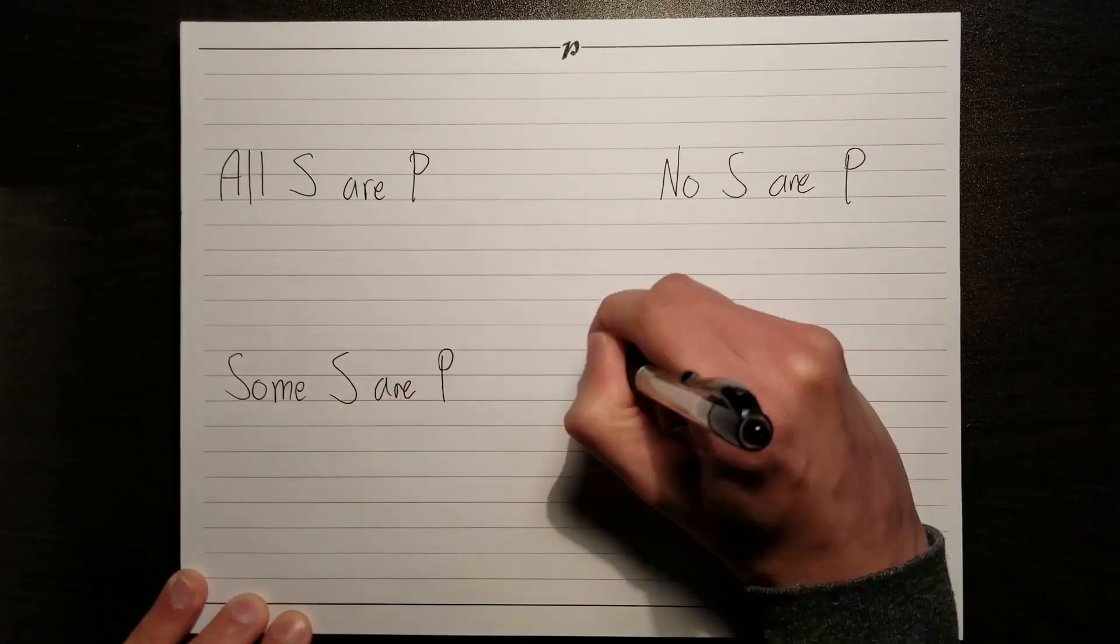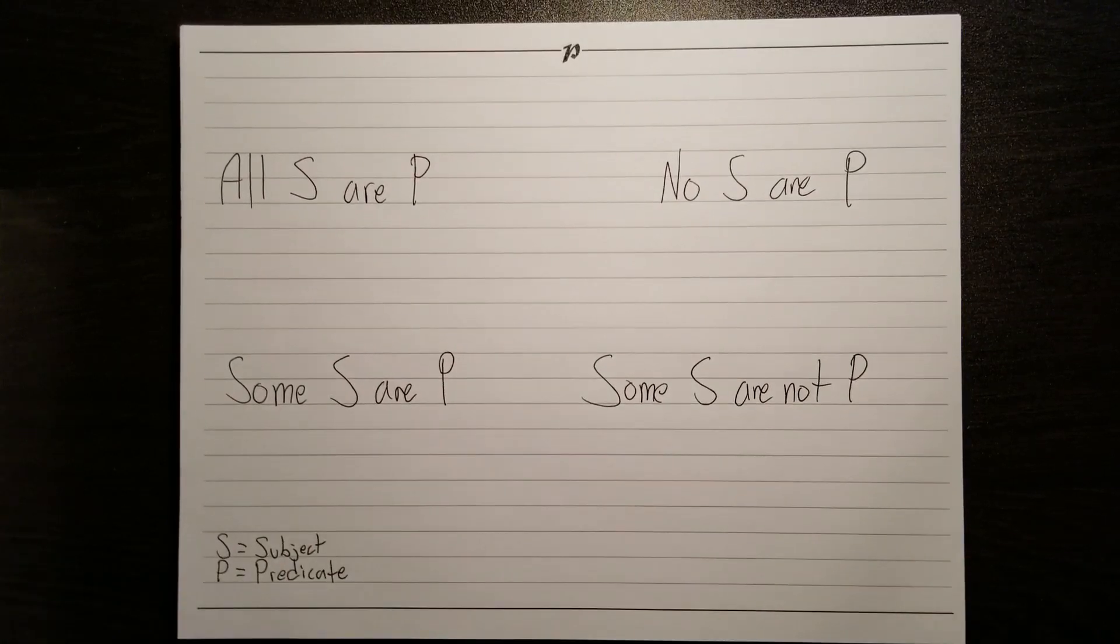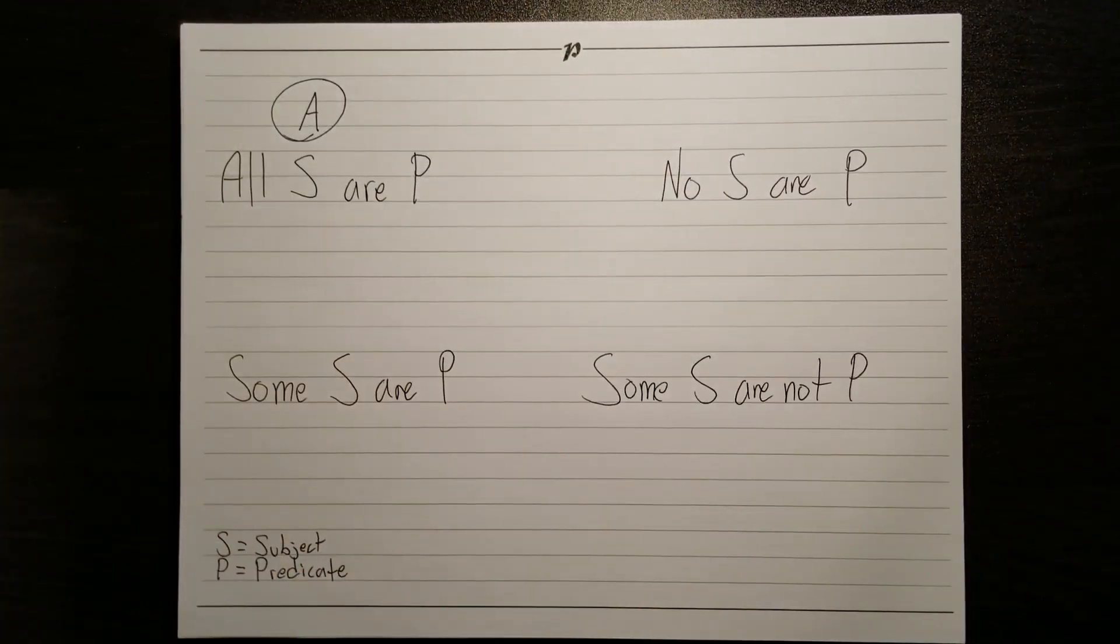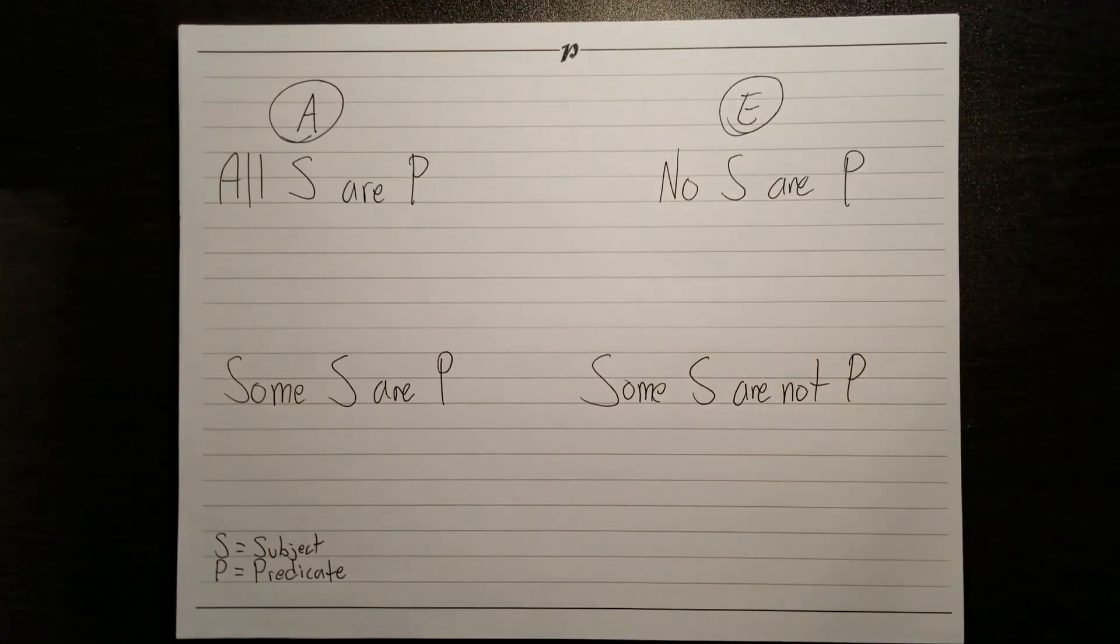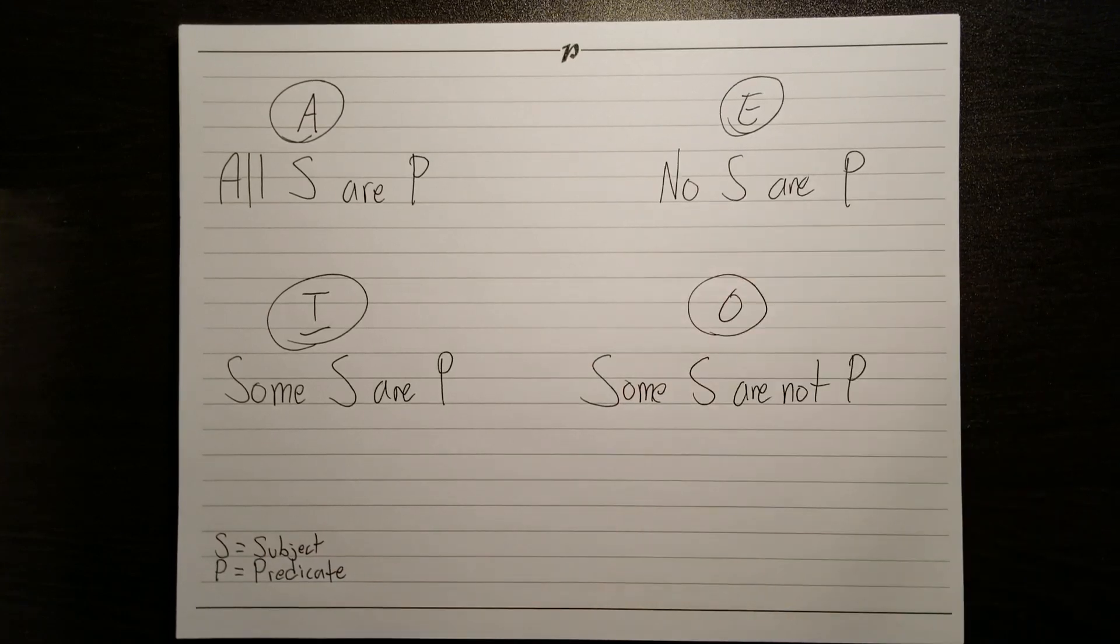In categorical logic, there are only four types of statements. We'll use S to stand for the subject and P to stand for the predicate. All S are P is an A-type statement. No S are P is an E-type statement. Some S are P is an I-type statement. And some S are not P is an O-type statement.